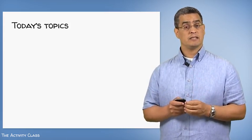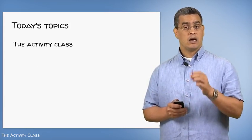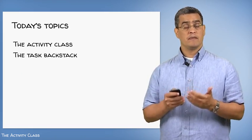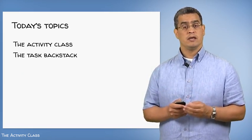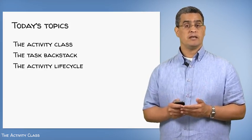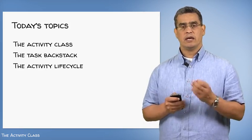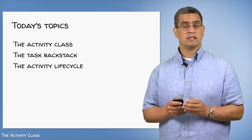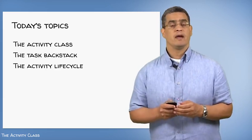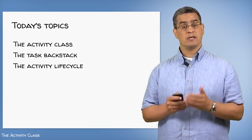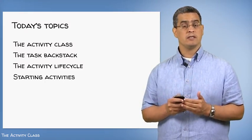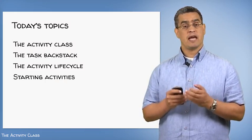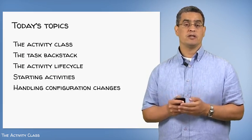I'll start by presenting the Activity class itself. Next, I'll discuss Android's Task Backstack, which helps users easily navigate back and forth among the activities they use. After that, I'll discuss the lifecycle of activities — how they're created, executed, and terminated, and how Android manages and communicates these lifecycle phases to your applications. After that, I'll discuss the APIs and patterns you'll need to programmatically start activities. And finally, I'll finish up with a discussion of how Android activities handle device and application configuration changes.